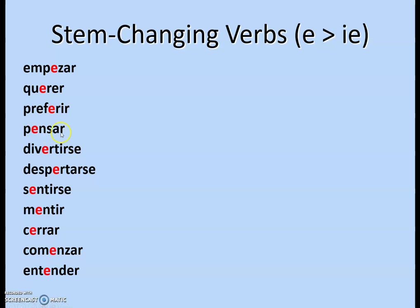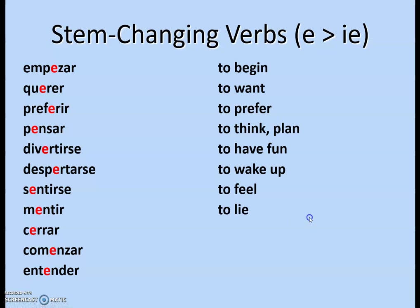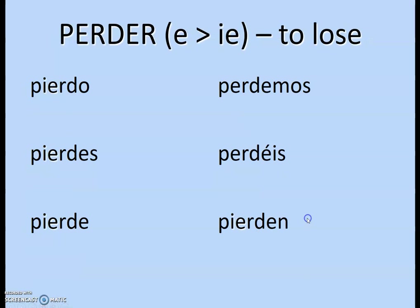If there are two vowels in the full verb, you always change the second one. Here's an example: perder means 'to lose.' So the conjugations are: pierdo, pierdes, pierde, perdemos — notice the nosotros form goes back to perd instead of pierd — and then pierden, because that's outside of the boot.